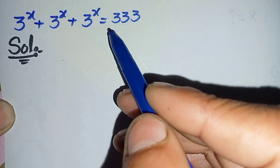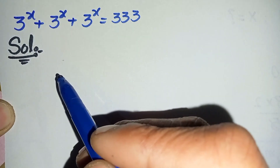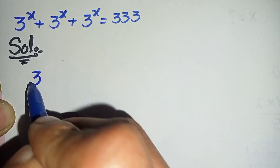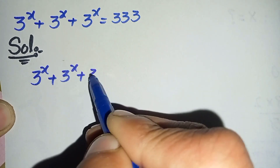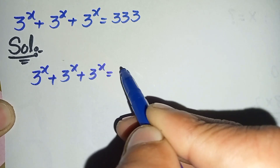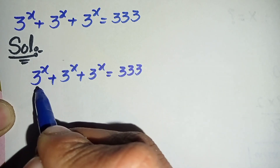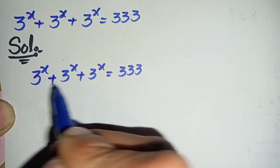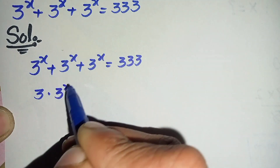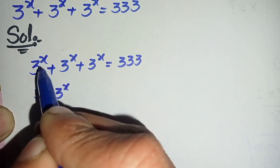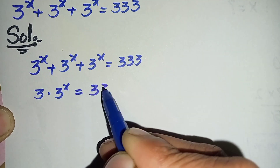To solve this math problem properly and step by step, first we will write the solution and then write this question again. So the question is 3 raised to power x plus 3 raised to power x plus 3 raised to power x is equal to 333. Looking at the left hand side, 3 raised to power x is added three times, so we can write this as 3 times 3 raised to power x, because the same number 3 raised to power x is added three times, equal to 333.